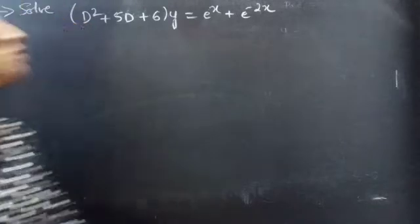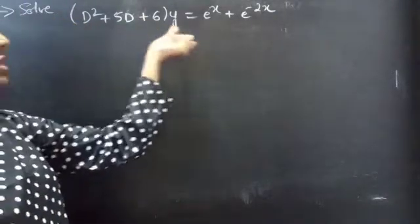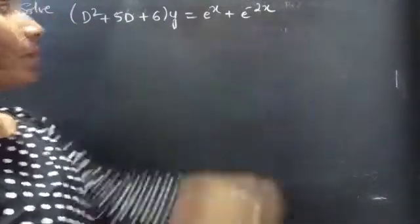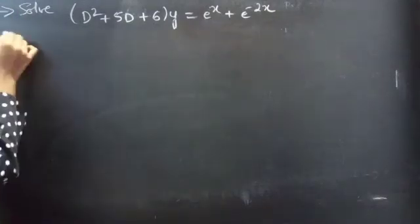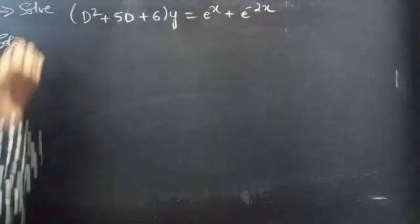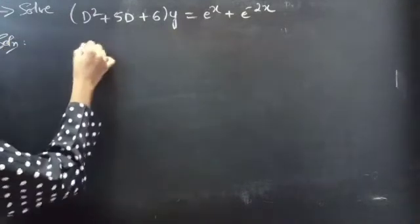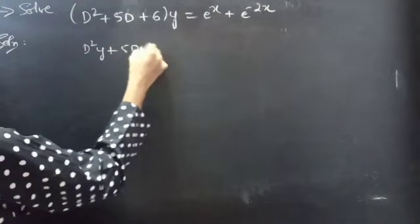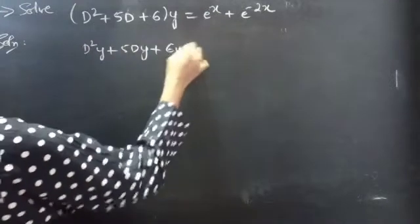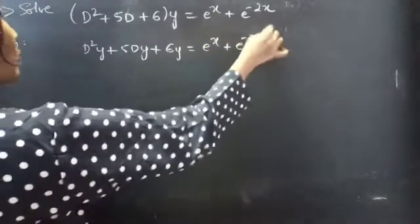Problem. Solve: (D² + 5D + 6)y = e^x + e^(−2x). We are given D²y + 5Dy + 6y = e^x + e^(−2x).